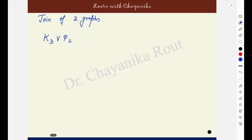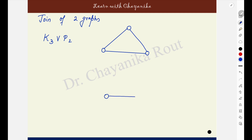Next, suppose we need to find out the join of K3 and P2. What I will do is I will draw individually both the graphs. This is my K3, which is the triangle, and my P2 is the path on two vertices, which is the same as the graph K2. This is my one graph and this is the other graph.